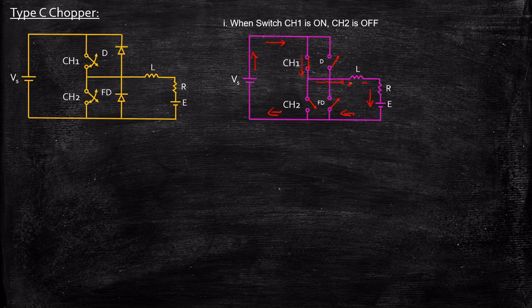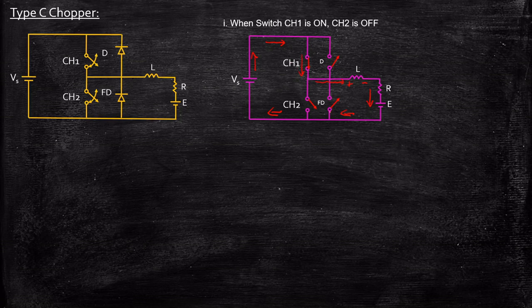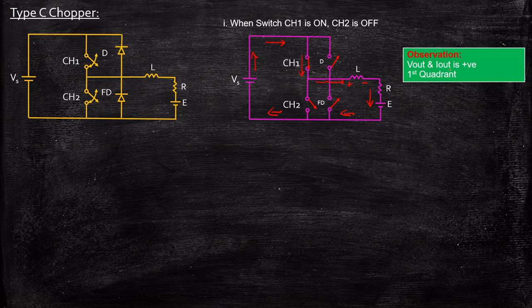You might have a question as to why diode D is open circuited. Positive is connected to the anode and positive is connected to the cathode as well, but the supply voltage will be more positive initially when turning on the switch. As a result it reverse biases this diode. The power flow is from the source to the load, so Vout and Iout are both positive, meaning it operates in the first quadrant.